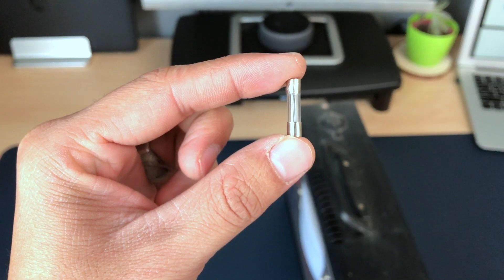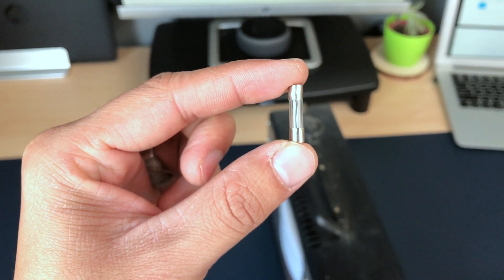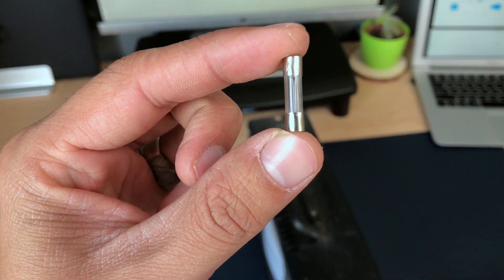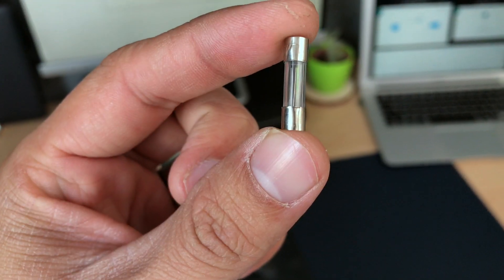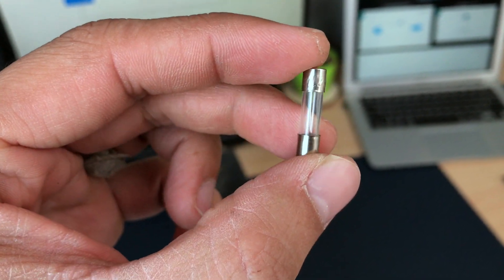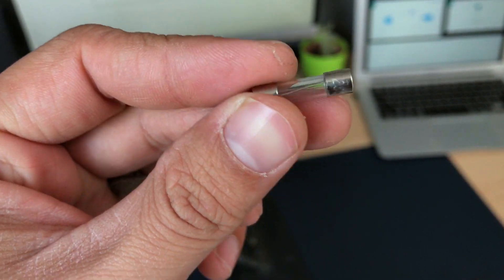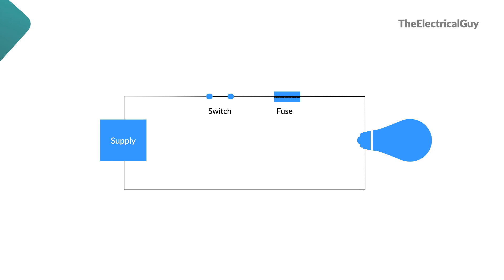You must be familiar with this thing. This is a fuse. Fuse is also used to create an open circuit in an abnormal condition so that the circuit or a particular equipment can be saved. So whenever an abnormal current passes through the circuit, the fuse will be blown and the continuity of current will be interrupted.